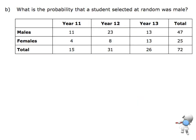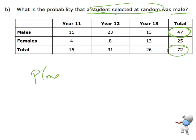Let's have a look at the next question. What is the probability that a student selected at random was male? Again, that's talking about out of the total. I know in total I've got 47 males and 72 students in total, so the probability of a male is 47 out of 72.